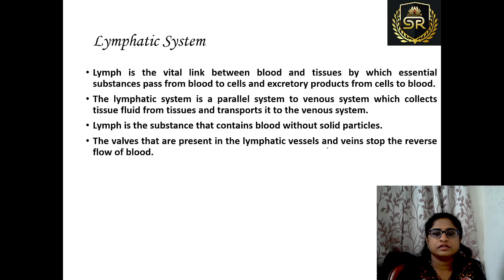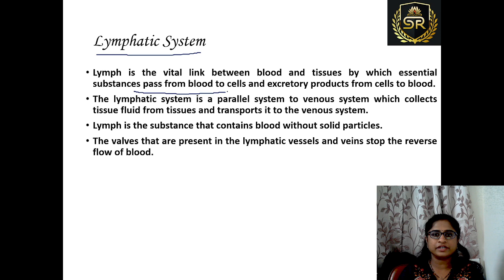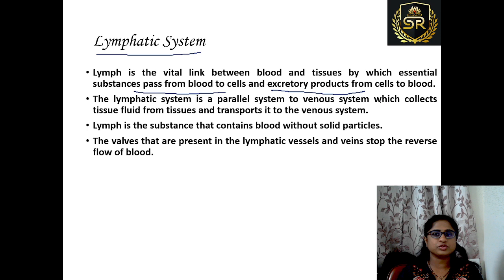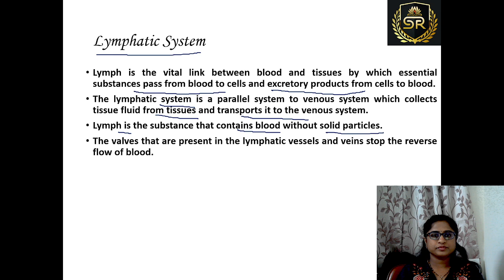Next, we will discuss the lymphatic system. Lymph is the vital link between blood and tissues, by which essential substances pass from the blood to the cells, and excretory products pass from the cells to the blood. The lymphatic system is a parallel system to the venous system which collects tissue fluid from the tissues and transports it to the venous system. Lymph is the substance that contains blood without solid particles. Valves present in the lymphatic vessels and veins stop the reverse flow of blood.